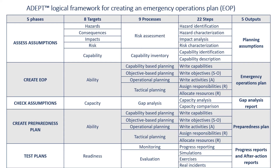This table represents a logical framework for the ADEPT planning system. It details the specific activities involved as the outputs, which include a list of planning assumptions, an emergency operations plan, a gap analysis report, a preparedness plan, and quality control measures that include charts and corrective action plans.